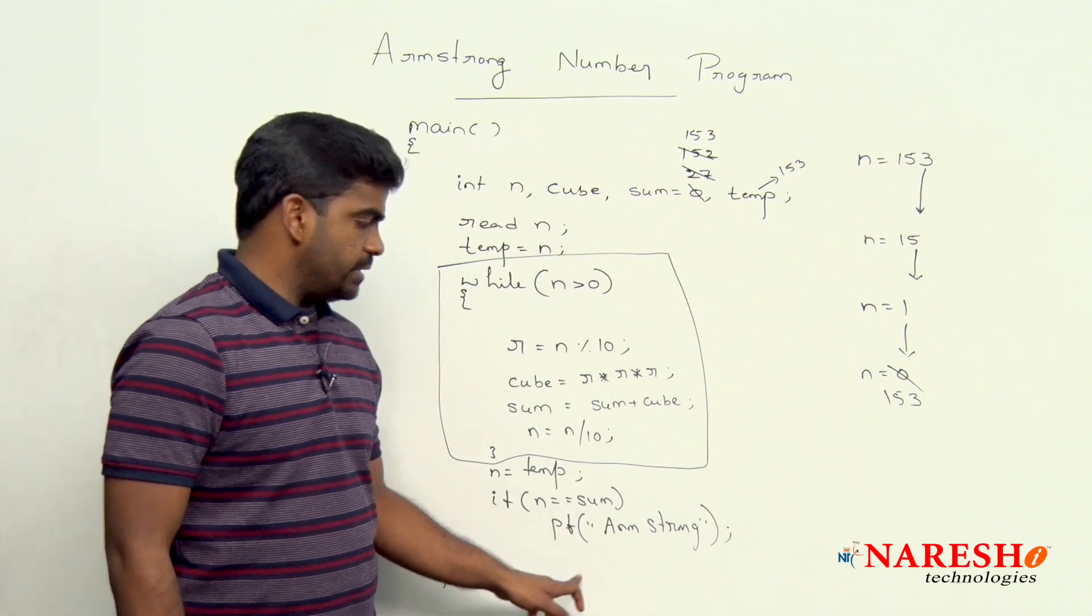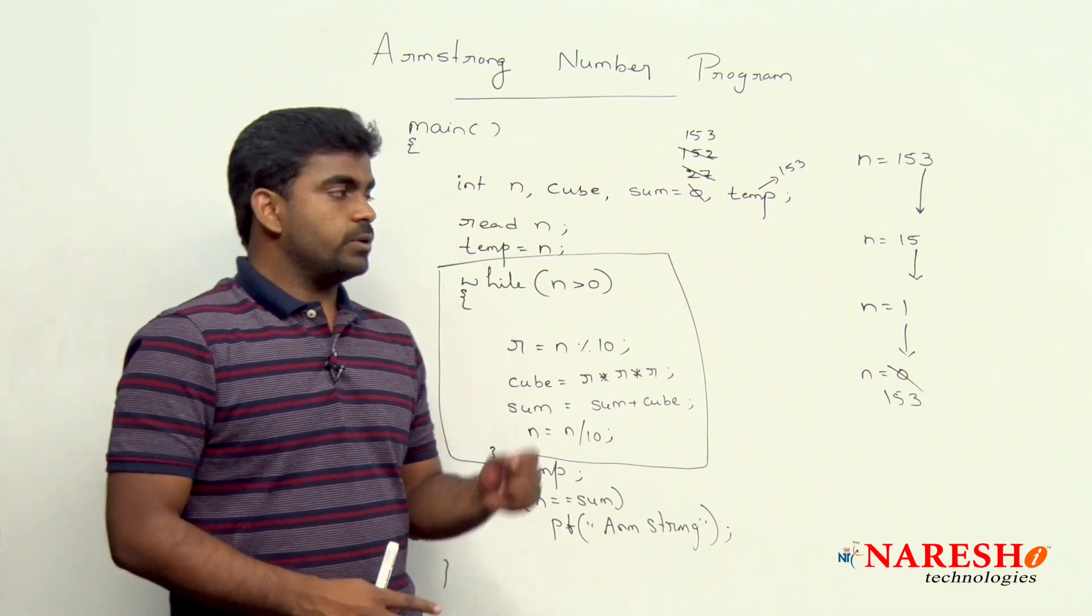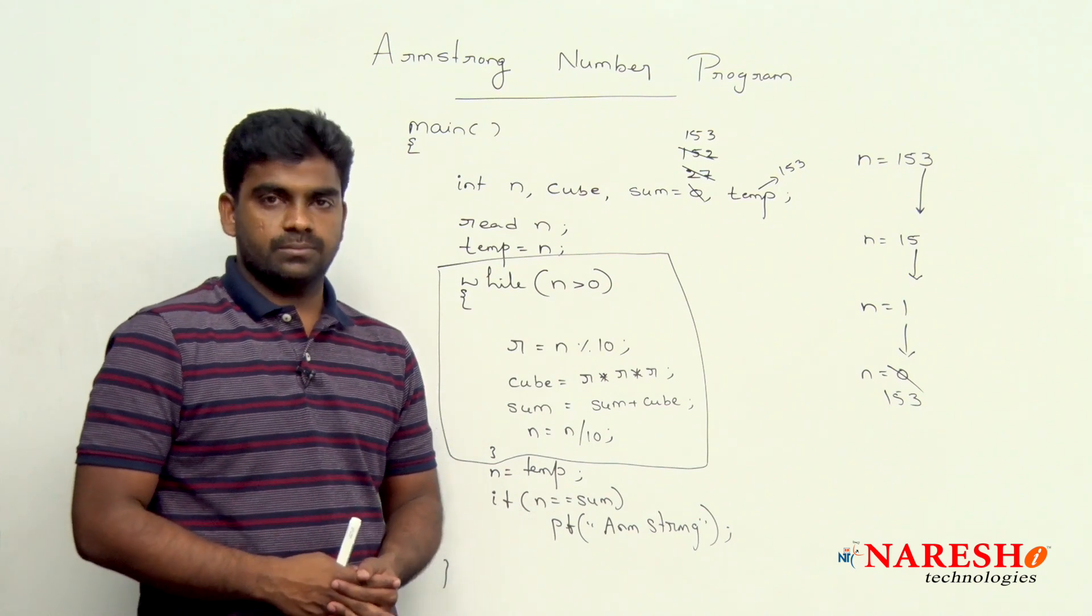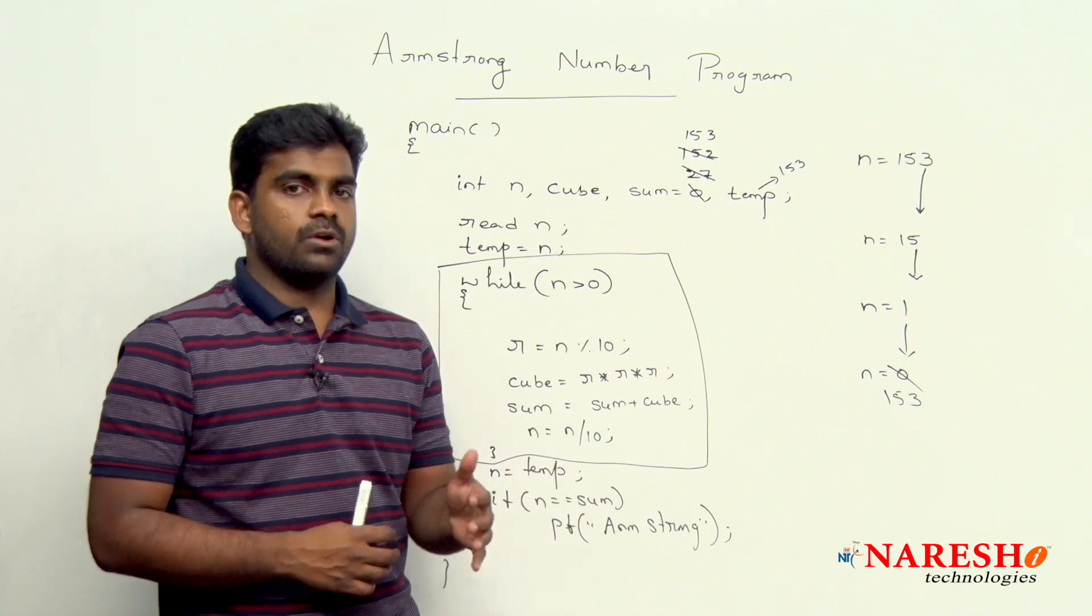Now, if you check, you will get the answer correctly. Temp variable is very very important because every time we are modifying the n value. This is the way we are checking the input number is an Armstrong number or not. Hope you understood.